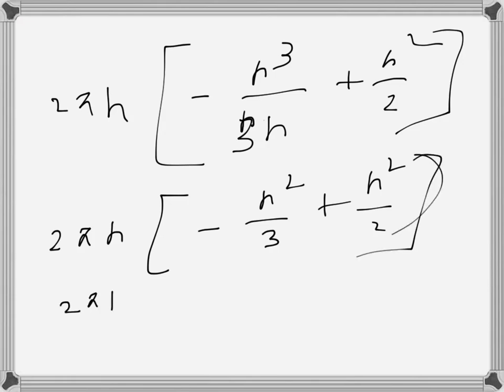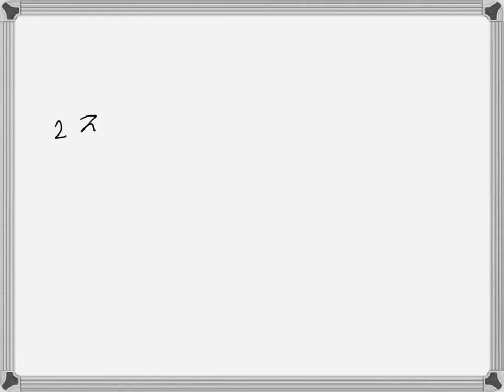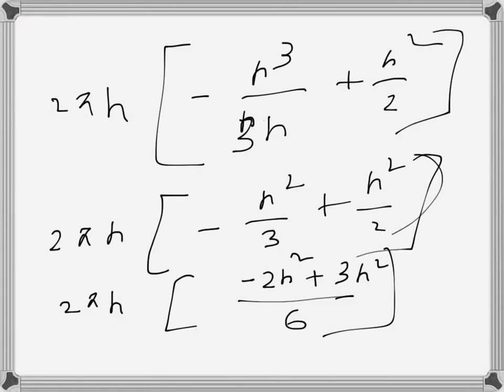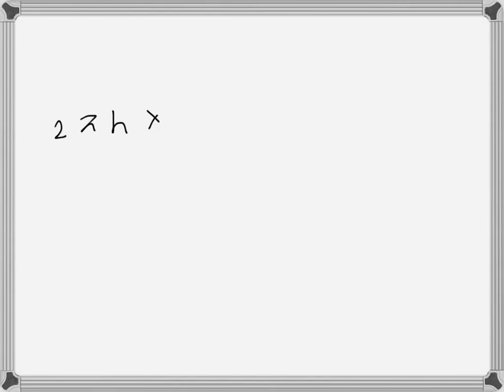So 2πh. Using common denominator 6, this becomes minus 2r squared plus 3r squared over 6, which simplifies to 2πh times r squared over 6.